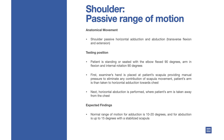Anatomical movement: shoulder passive horizontal adduction and abduction. Patient is standing or seated with the elbow flexed 90 degrees, arm in flexion and internal rotation 90 degrees.